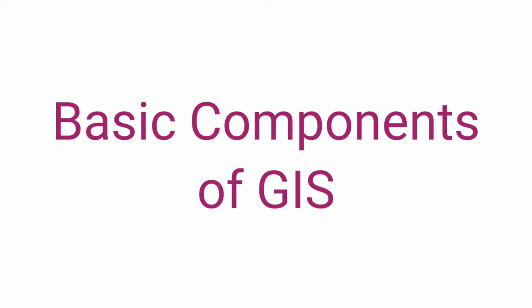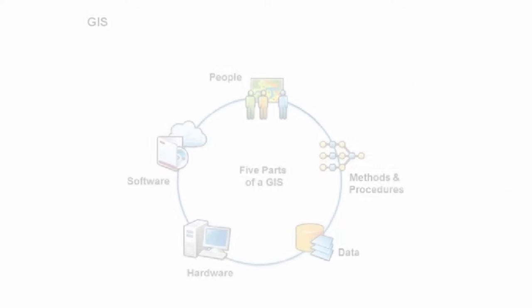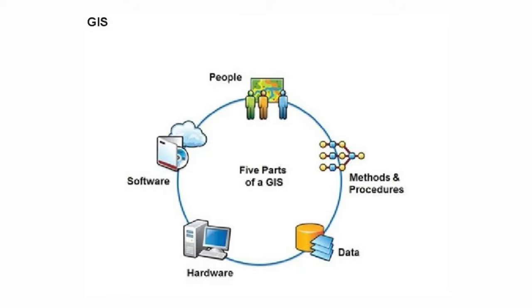So what are the basic components that a GIS requires? The important components of a geographical information system include hardware, software, data, people, and procedures.